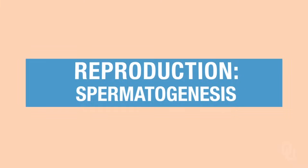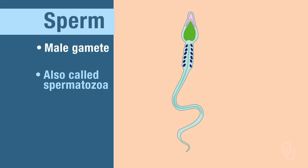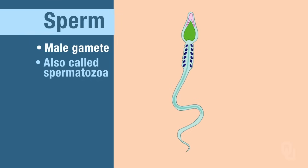In this video lecture, we are going to be studying sperm and their development. Starting out with the sperm, remember that sperm are the male gamete. Also be sure that you understand that sperm are also called spermatozoa — that's the same thing, so if you hear the term spermatozoa, we are referring to sperm.